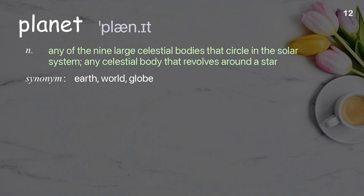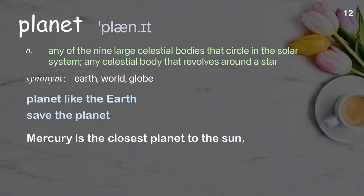Planet: any of the nine large celestial bodies that circle in the solar system; any celestial body that revolves around a star. Examples: planet like the earth, save the planet. Mercury is the closest planet to the sun.